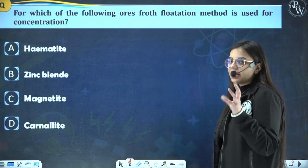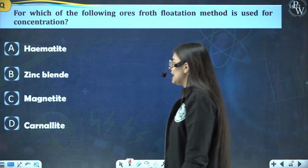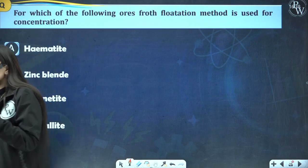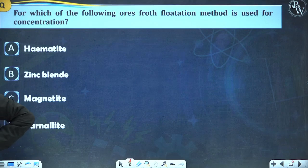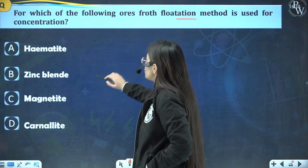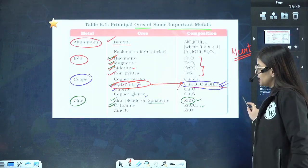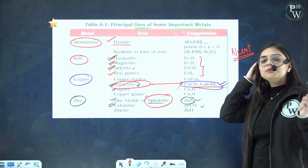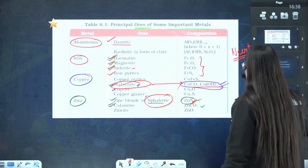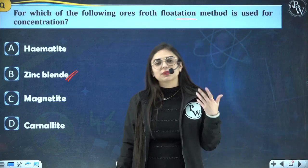Q3: For which of the following ores is froth flotation method used for concentration? A: hematite, B: zinc blende, C: magnetite, D: carnalite. Answer is zinc blende — because zinc blende (ZnS) contains sulphide ore, and froth flotation process is used for sulphide ores. That's why the answer is zinc blende.